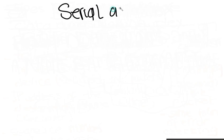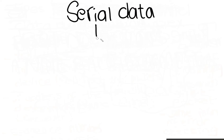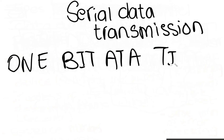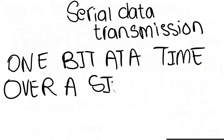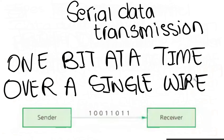Now let's talk about types of data transmission. We have serial data transmission and parallel data transmission. Serial data transmission occurs when data is sent one bit at a time over a single wire. Bits are sent one after the other as a single stream.